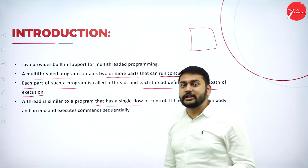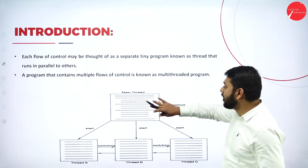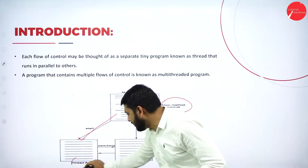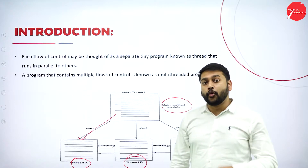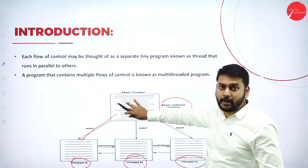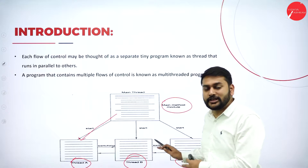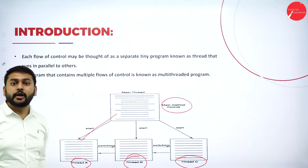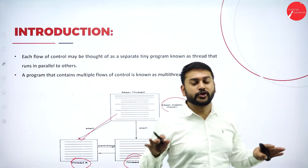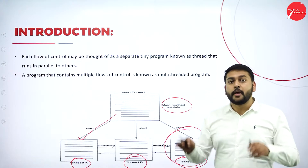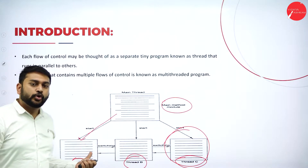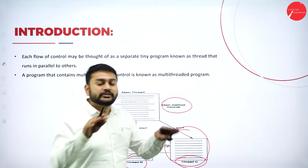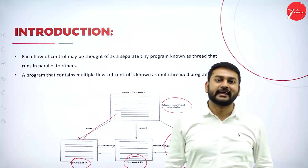Let's take an example. I have a main thread — a main method module. From it, I have Thread A, Thread B, and Thread C. This main program has sub-programs, and each sub-program executes parallelly with its own flow control. Since I have more than one thread, this is called multi-threading — different parts of the program executing in parallel.